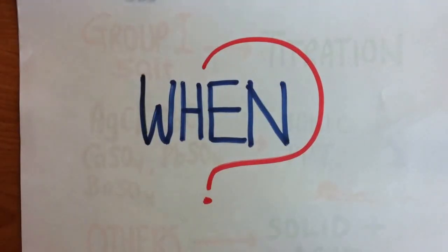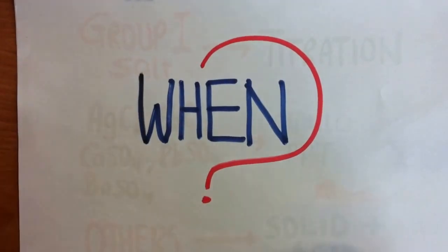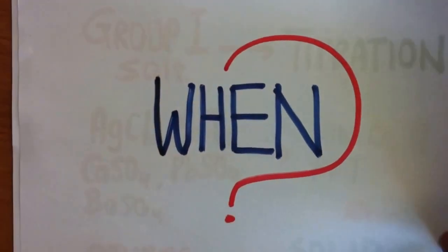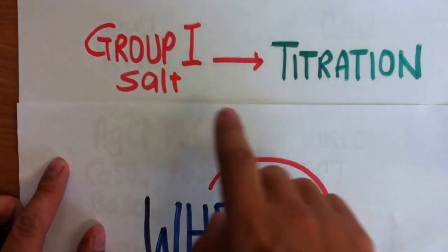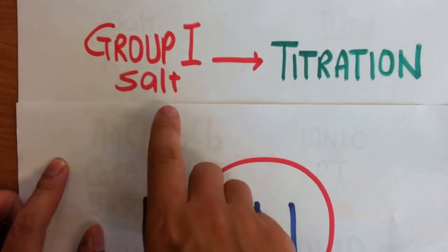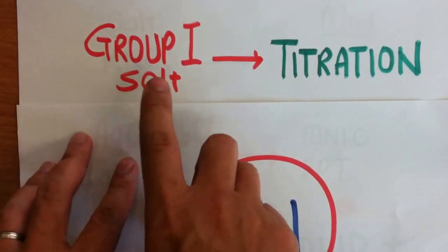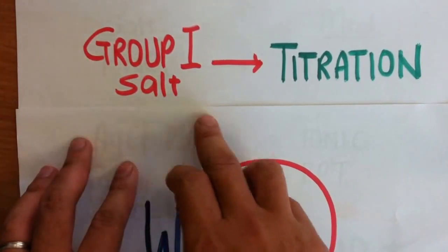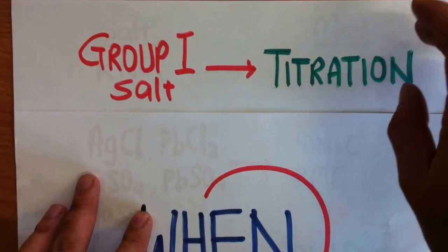The next video is basically about when to use the different methods of salt preparation. We will keep it very simple. When you are faced with a group 1 salt — things that are in group 1, for example potassium chloride or lithium nitrate, any metal that is in group 1 — we use the method known as titration.